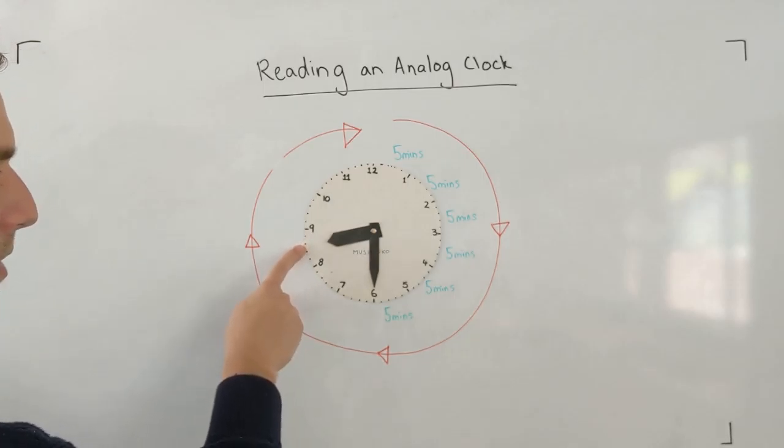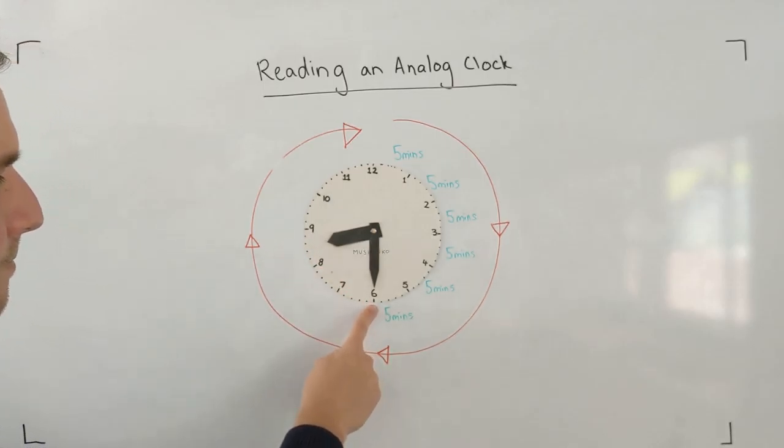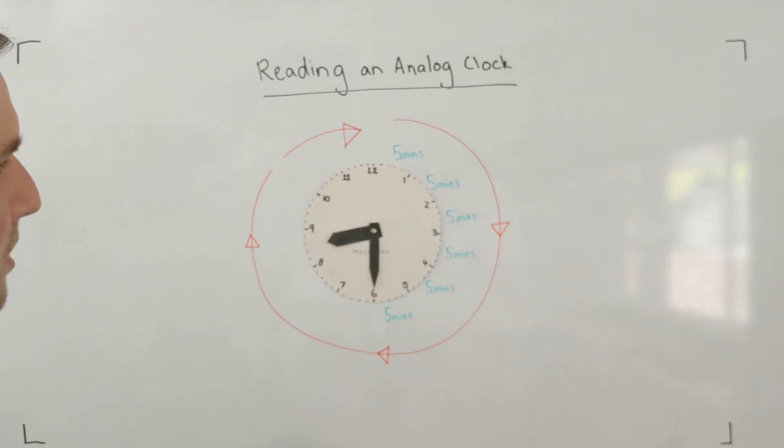So it would be 8 is the hour and 30 is the minutes, which is half of the way around. So it's 8:30.